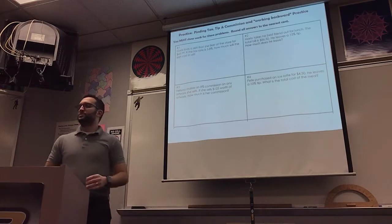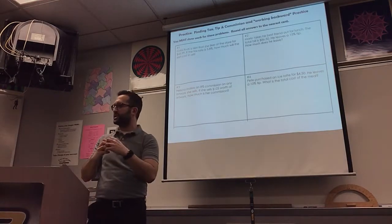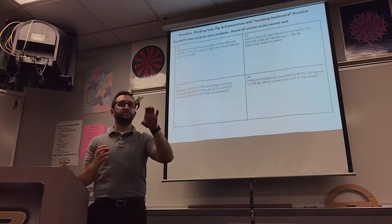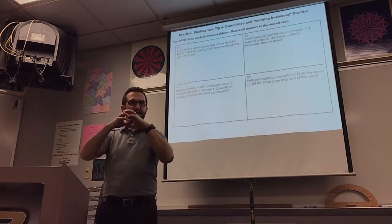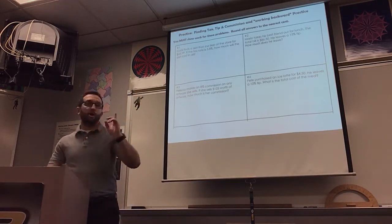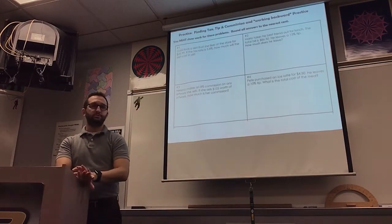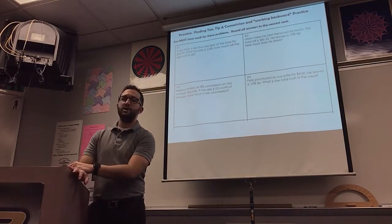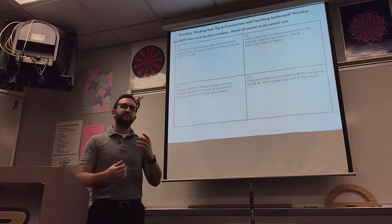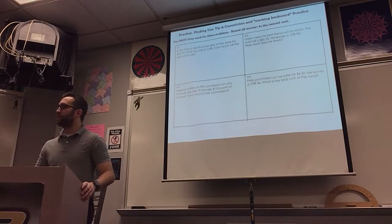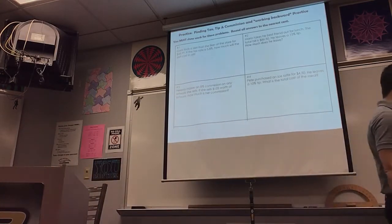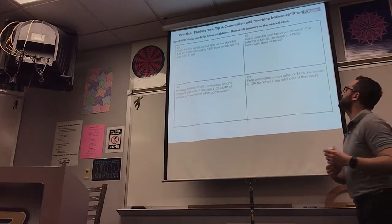I want you to look at number 1 and number 2. The shortcut method is when you combine the total percent with the tax, or when you combine the total percent with the tip, and make it something that's greater than 100%. Some of them you can use the shortcut, and some of them you can't. Take 10 seconds, read the problems, and determine which one you can use the shortcut method on and which one you can't.